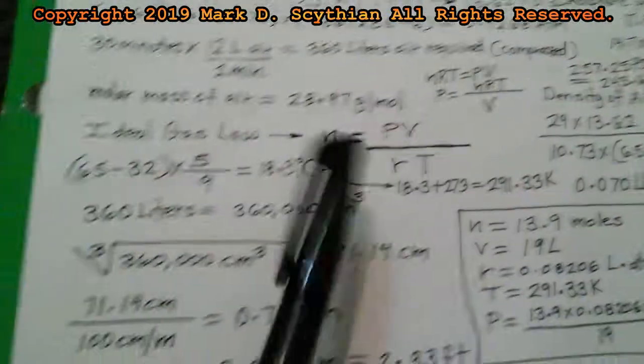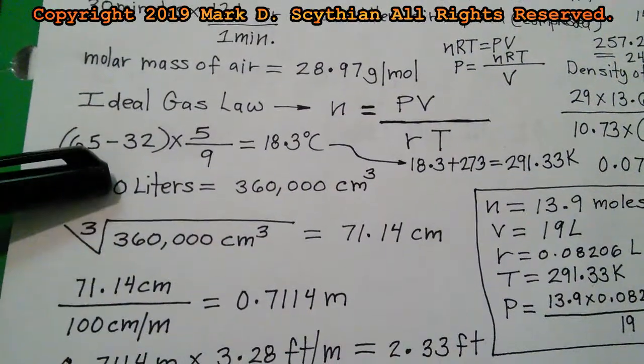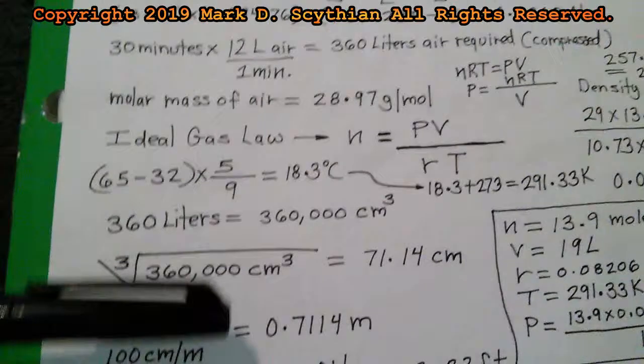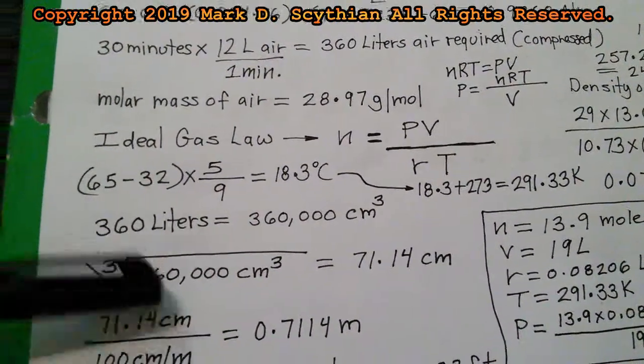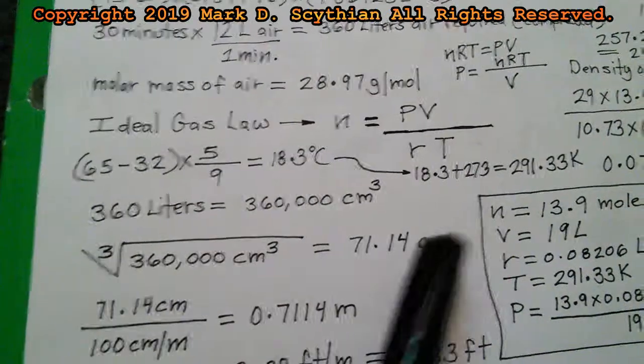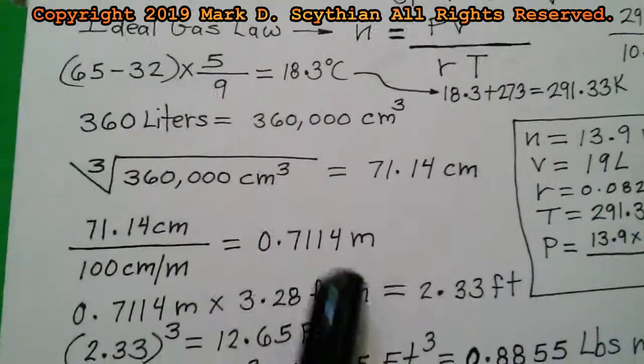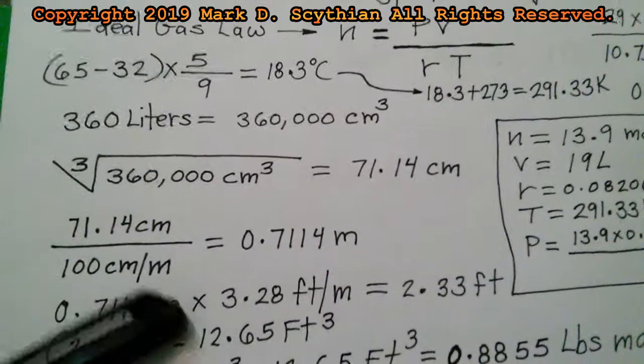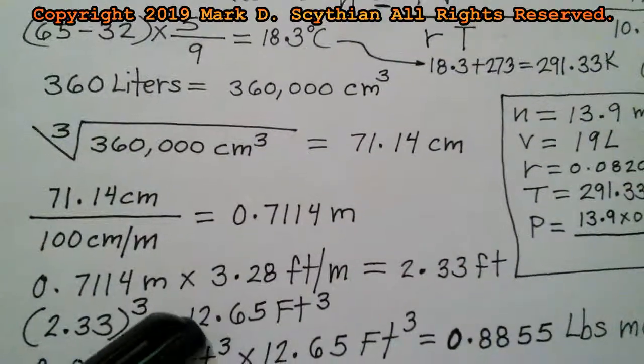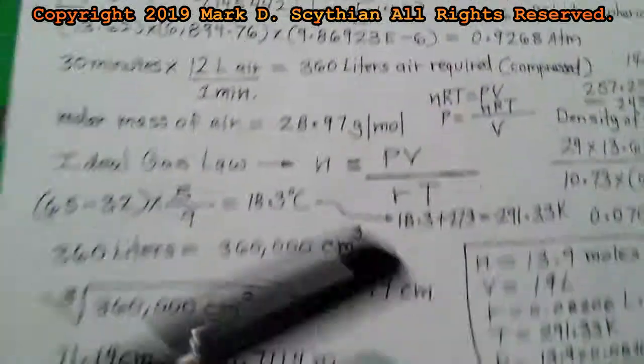Next we take the 360 liters. We know there's a thousand cubic centimeters to a liter of volume. We can then convert that to cubic centimeters, 1000 milliliters is also 1000 cubic centimeters, get the cube root of 360 times 1000 cubic centimeters, 71.14 centimeters linear. Divide that into 100 centimeters to a meter linear, that converts it to 0.7114 meters. Then we convert that to feet, 3.28 feet to a meter, 3.22 feet in cubit. 12.65 cubic feet is equal to 360 liters of air.